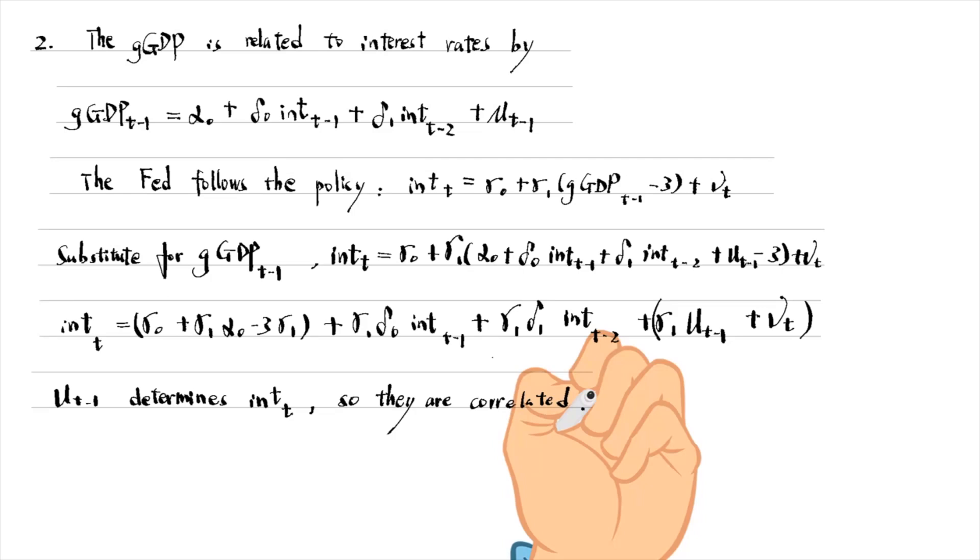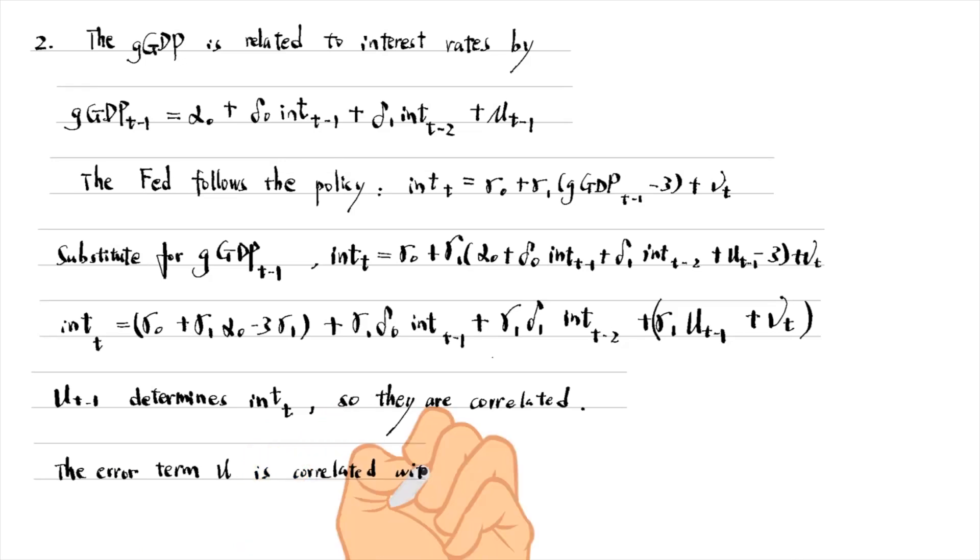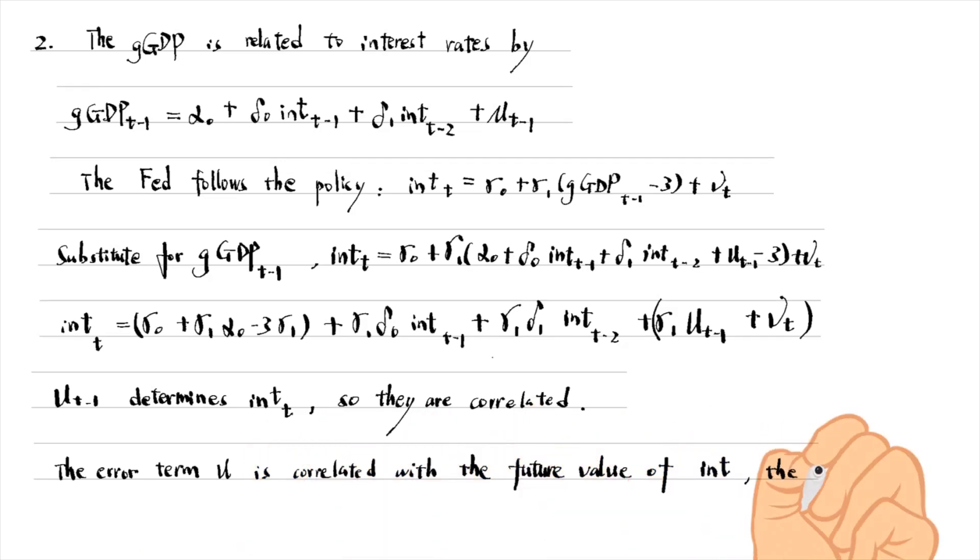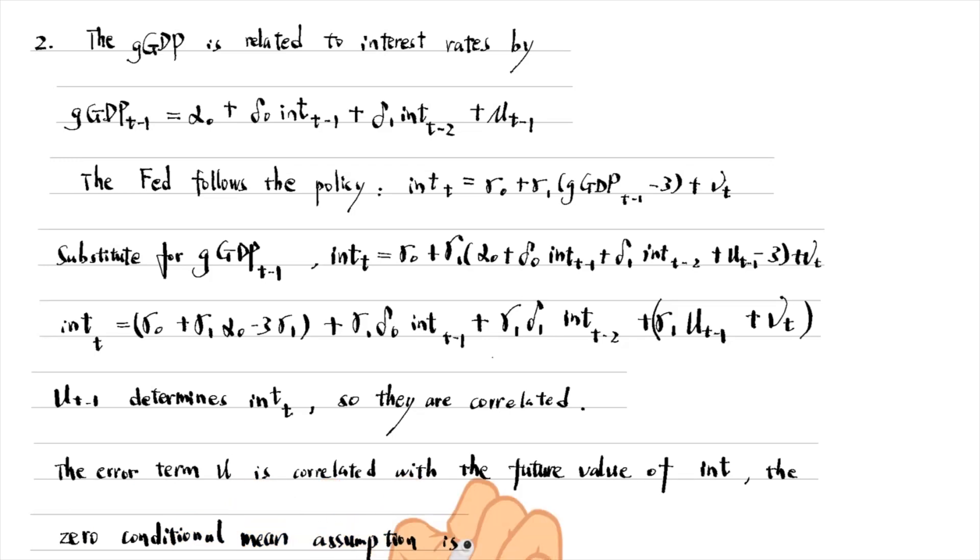So they are correlated. It violates the first Gauss-Markov assumption for time series. Since the error term mu is correlated with the future value of the interest rate, the zero conditional mean assumption does not hold.